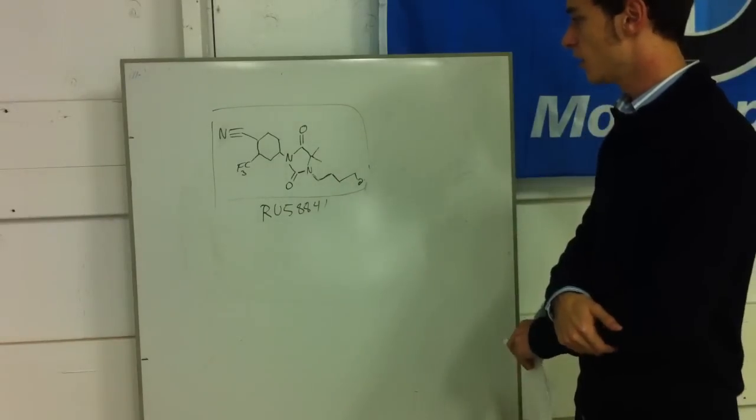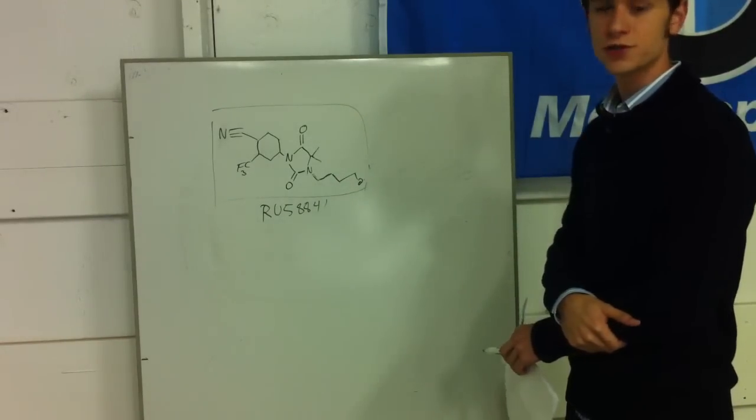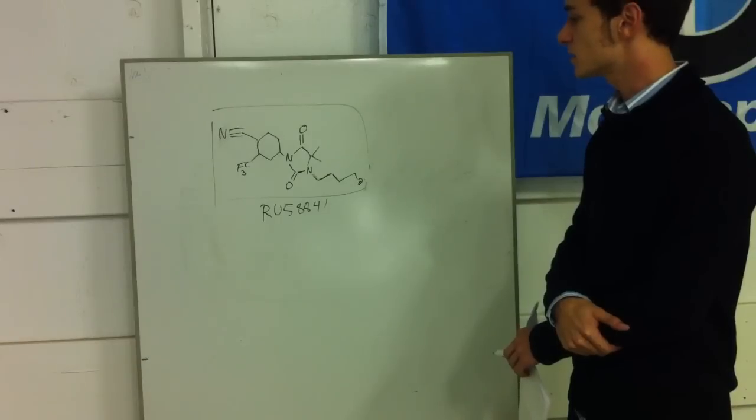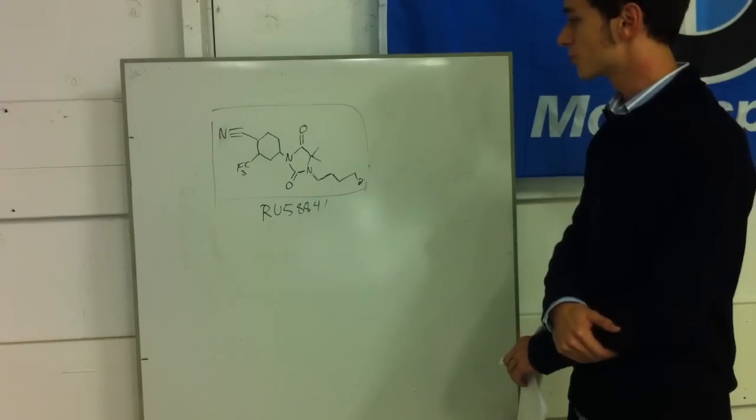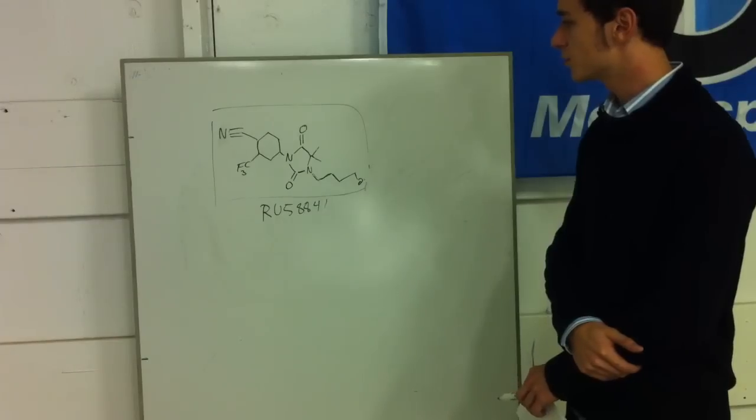So if we look at RU58841, this is just the molecular structure here. We can already begin to see that it's got a really polar end. It's got a fluorinated group and a nitrile.